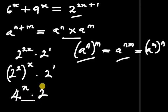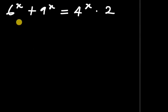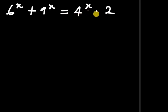So this is what we are going to use. Our new equation becomes: 6 to the power of x plus 9 to the power of x equals to 4 to the power of x times 2.